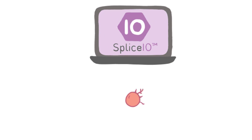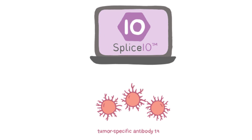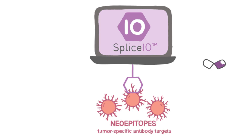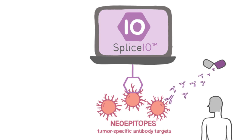Invisagenix Splice.io is an AI discovery platform that allows our team to identify tumor-specific antibody targets called neoepitopes. Neoepitopes are fragments of proteins located on the extracellular surface of cancer cells, which can be targeted by antibodies from immunotherapies or the patient's own immune system.